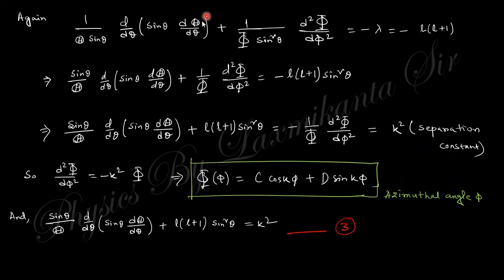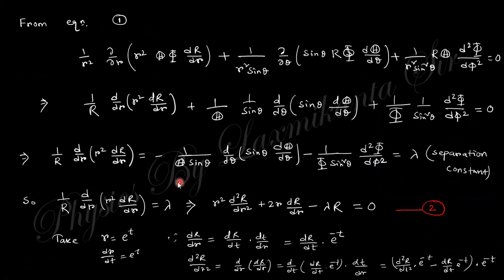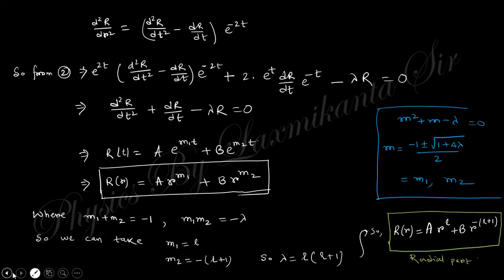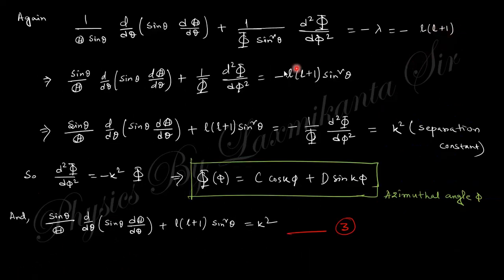Having obtained the radial part, the remaining two parts are theta and phi. Writing out the rest of the equation and setting the phi part equal to minus lambda, then multiplying through by sine-squared theta, the phi part separates out from the theta part. Taking the separation constant as k-squared, the general phi solution is a combination of cosine and sine.